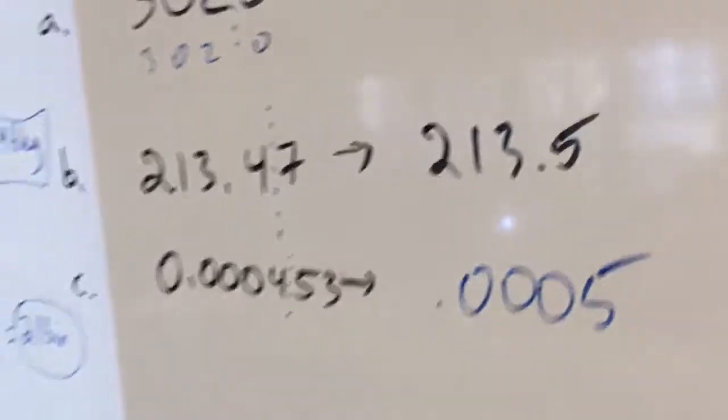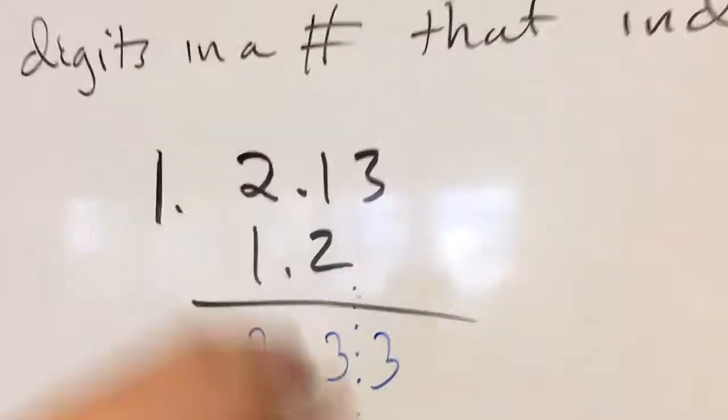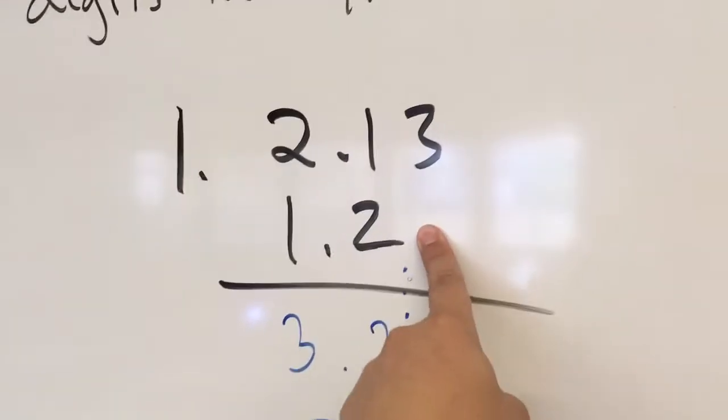For adding, we line up. We only get two significant digits because of this, and so we get our answer, we round, and we stay.